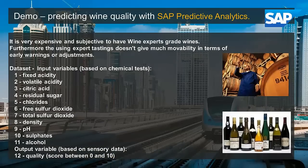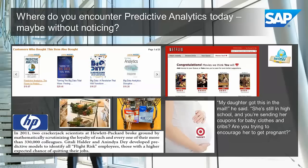This is a real dataset where we will be looking at a real case. We have a dataset of 12 different measures, all the way from fixed acidity, pH value, sulfates, alcohol percent, and, of course, what we are actually trying to predict — the quality of the wine.